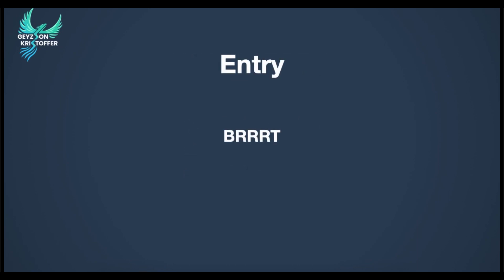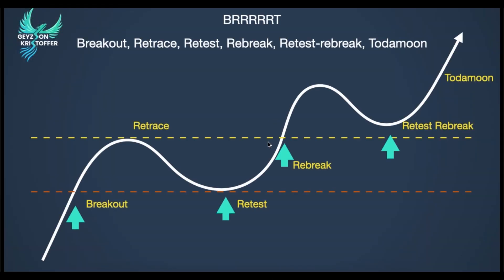Our entry is based on the BRRRT setup. This is the BRRRT framework. You can see there are many R's but I simplified it to three R's for easier reading. First, we have these two lines — this one is our daily level and this one is our intraday level. As the stock is going up, it will hit this level. If it breaks out of that level, that will be our letter B, or our breakout.